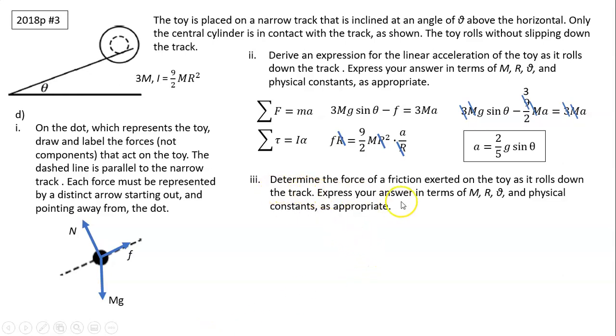Part 3. Determine the force of friction exerted on the toy as it rolls down the track. Express your answer in terms of M, R, theta and physical constants as appropriate. We already know friction is 9 over 2MA, and we know what A is, simply substitute it in for A. So it's 9 over 2M times A. 2 and 2 cancel. F equals 9 fifths Mg sine theta.